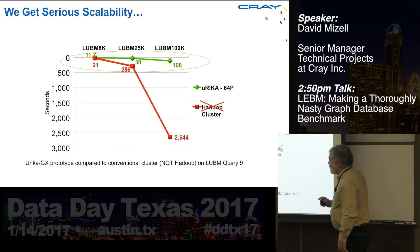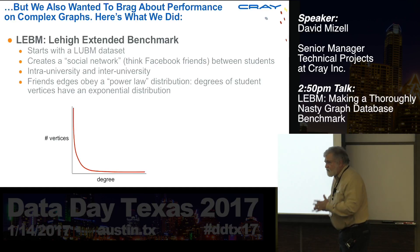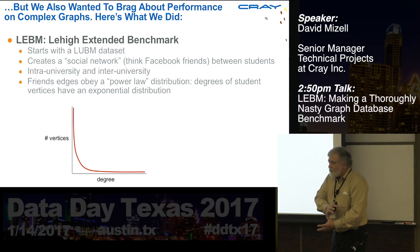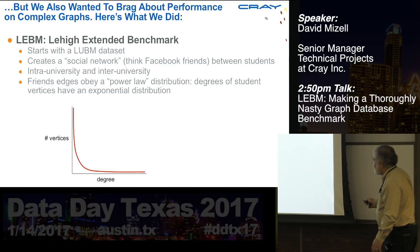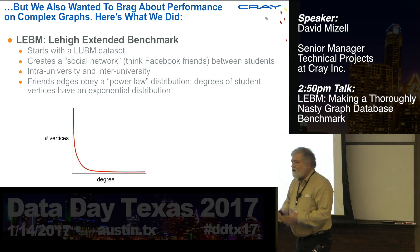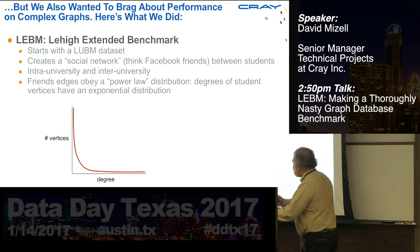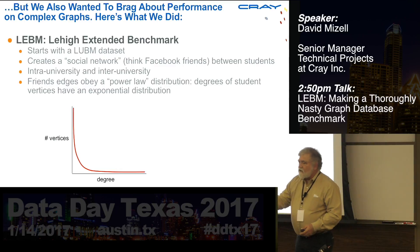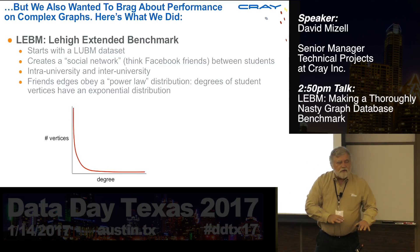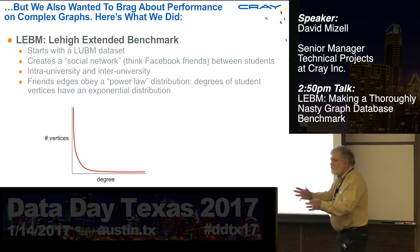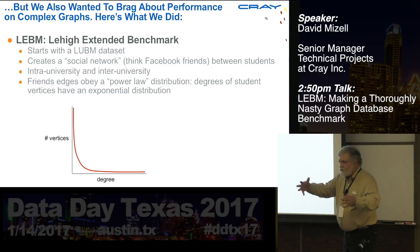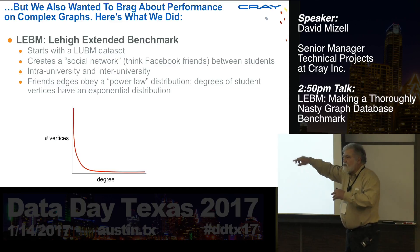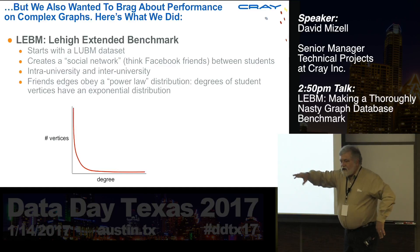We also wanted to demonstrate performance on complex, graph-oriented queries against a large graph-oriented database. So what we came up with we call LEHBUM — the Lehigh Extended Benchmark. The idea is to take the LUBM dataset with synthetic universities, pick out all the students, and create a social network between them. Think of a Facebook network — you create friend relationships between randomly selected students, dense within a university and sparser across universities.